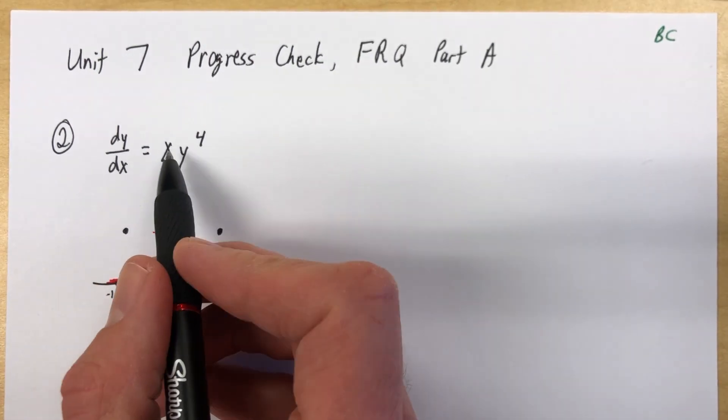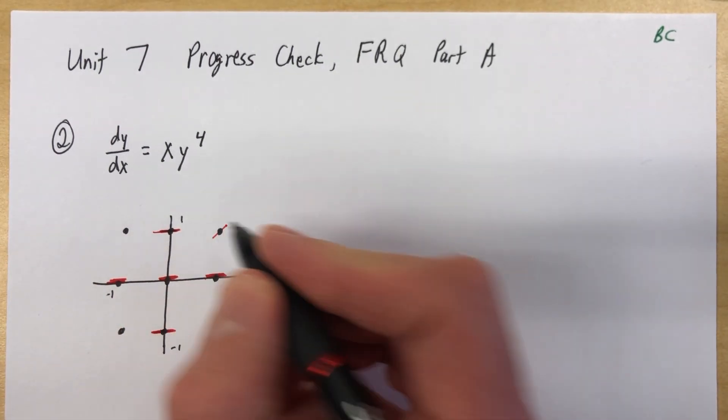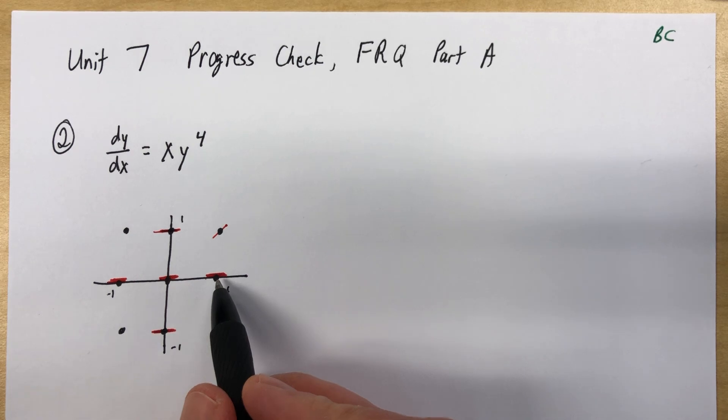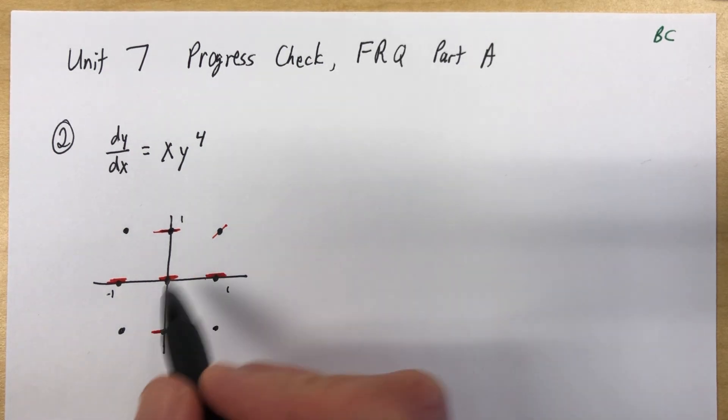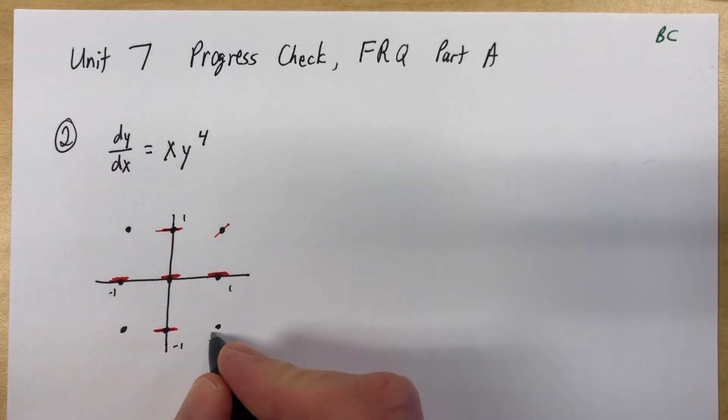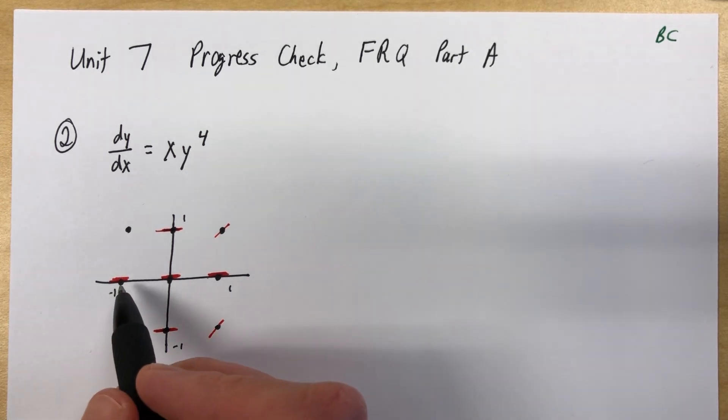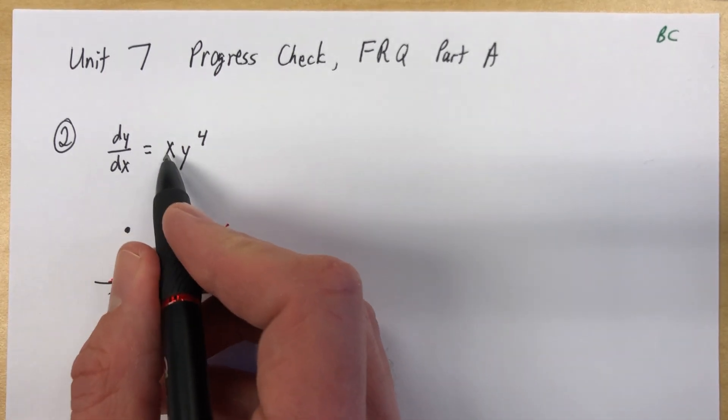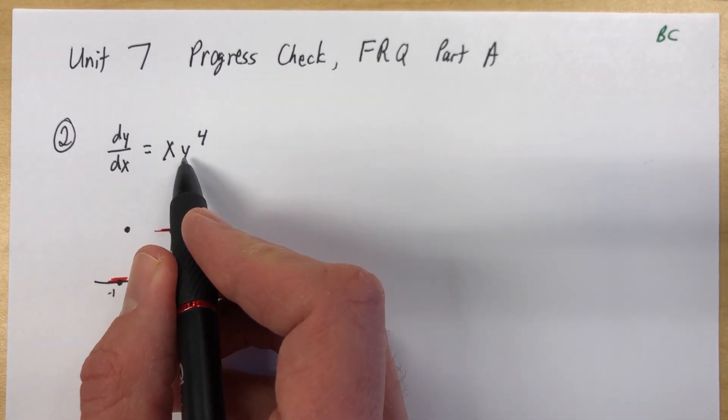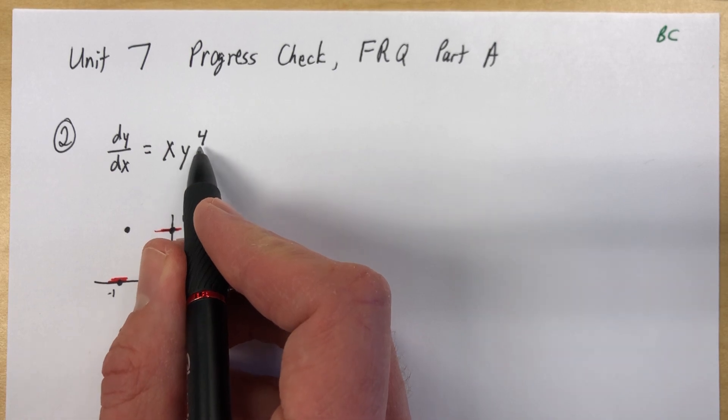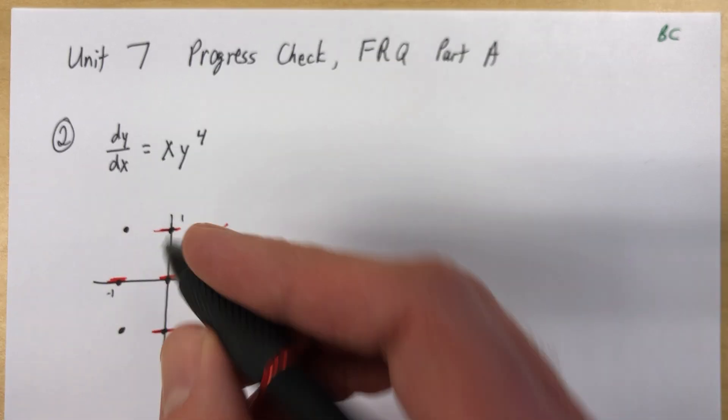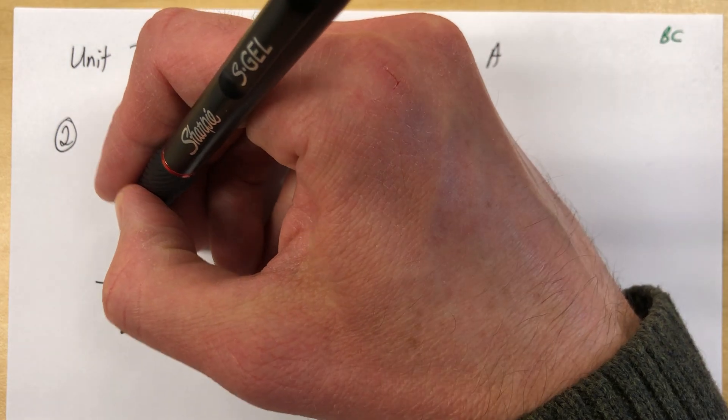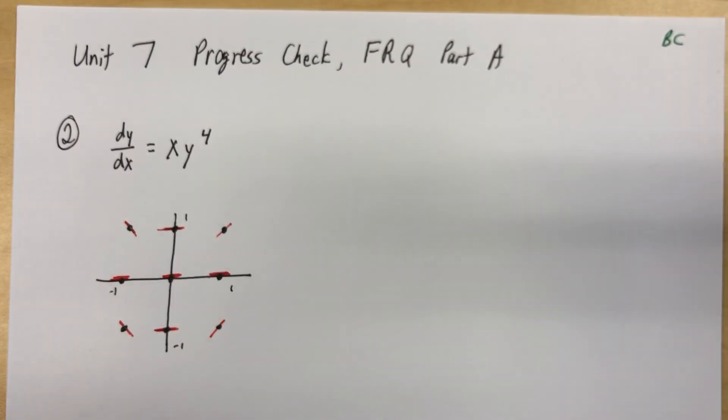And then we just do the math for the other ones. So if I plugged in (1,1), 1 times 1 to the fourth is still 1. 1 times (-1) to the fourth is still 1. And over here, if we were to plug in negative values for x, we're going to have negatives here, negative here. But then when we have 1 to the fourth, we get a positive. We have (-1) to the fourth, we still get a positive. So we have -1 times positive 1 on both of those.